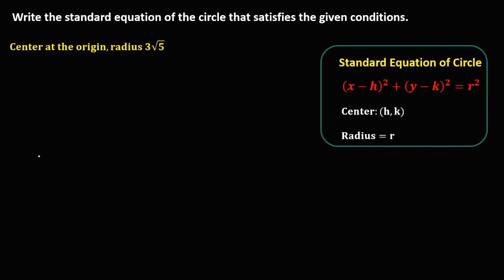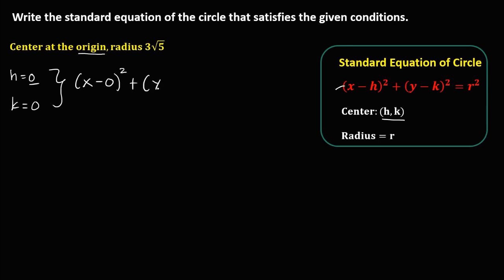From the standard equation of the circle, the center is h and k. Since the center is at the origin, h is equal to 0 and k is also equal to 0. To write the standard equation, we have x minus 0 squared plus y minus 0 squared equals r squared, where r is 3 square root of 5, then to the power 2.